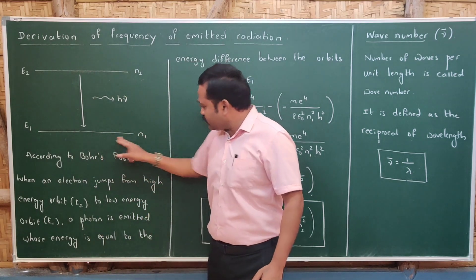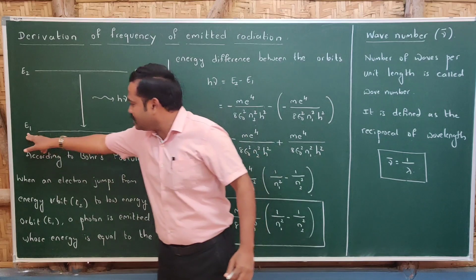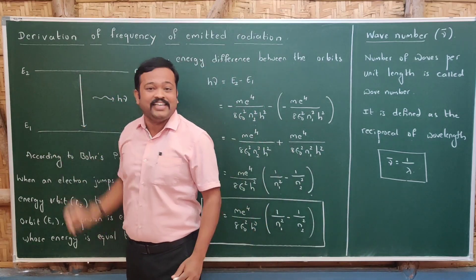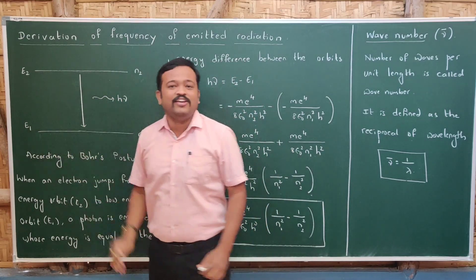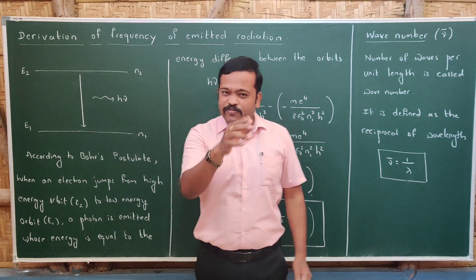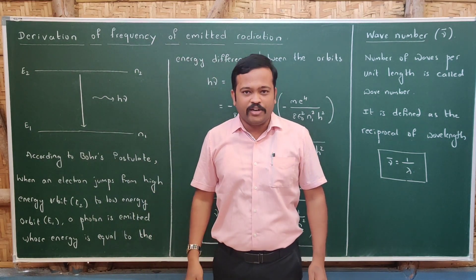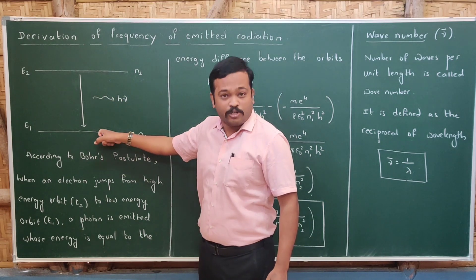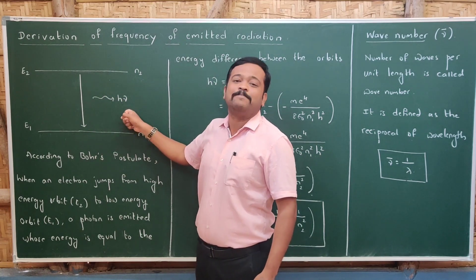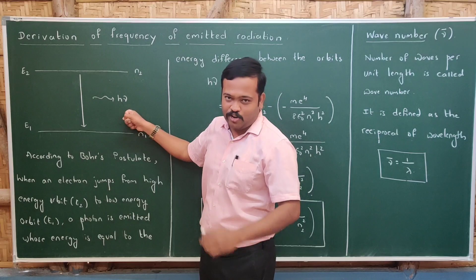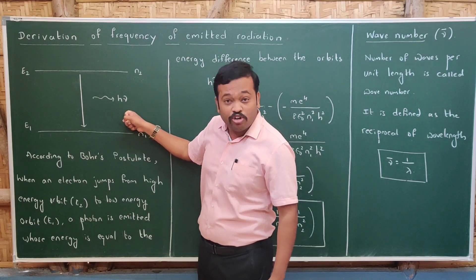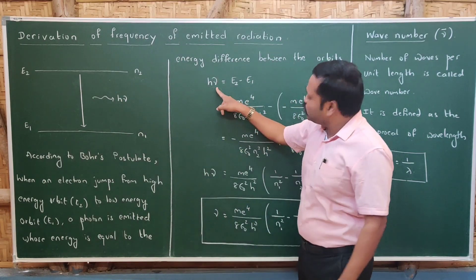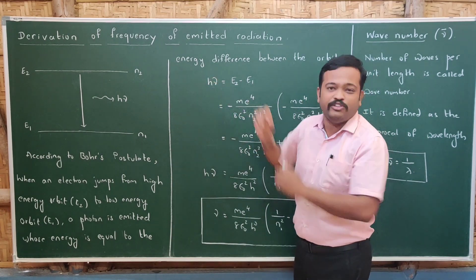We have two orbits: orbit n1 whose energy is E1, and orbit n2 whose energy is E2, where E2 is greater than E1. When an electron jumps from the high energy orbit to the low energy orbit, it emits electromagnetic radiation in the form of a photon whose energy is hν.